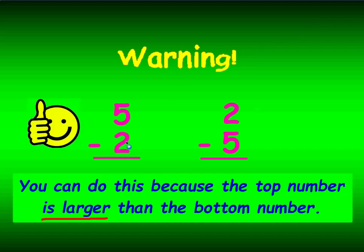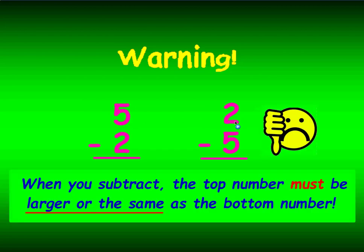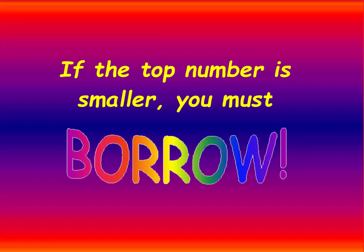First thing, let's look at this problem here. You can do this because the top number is larger than the bottom number, so you can subtract — 5 minus 2 is 3. But look at this one. This one you cannot do. When you subtract, the top number must be larger or the same as the bottom number. You can't take 5 away if you only have 2. If the top number is smaller, you must borrow.